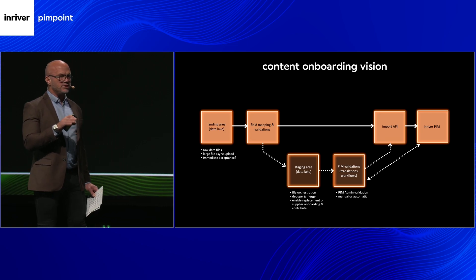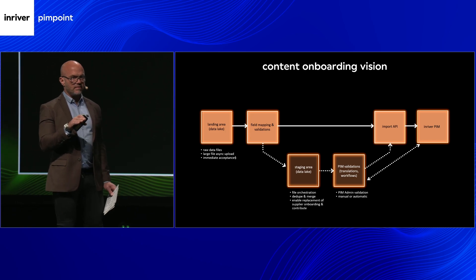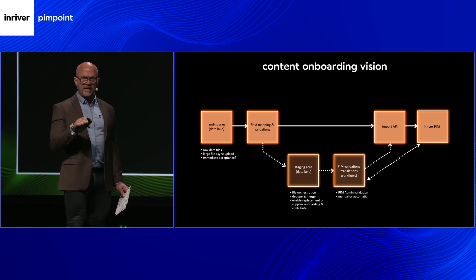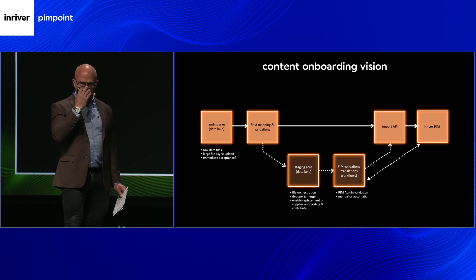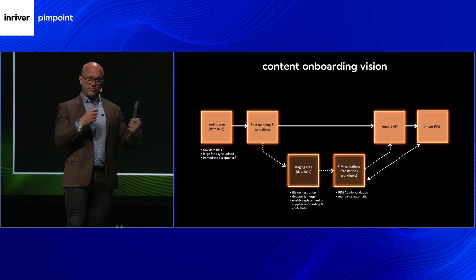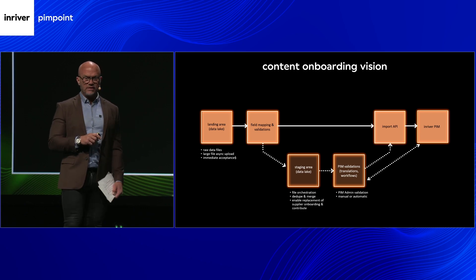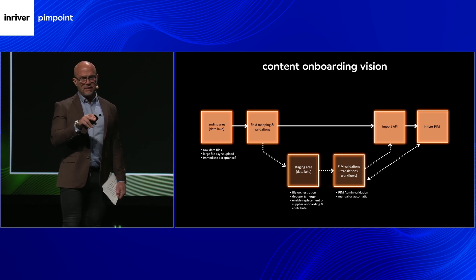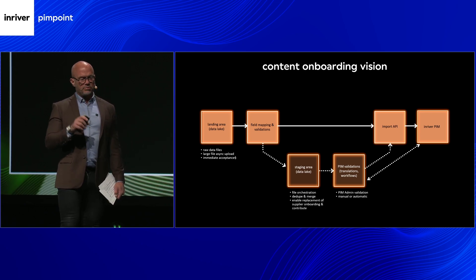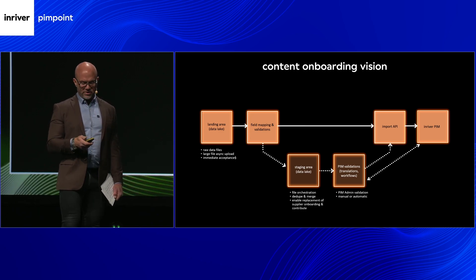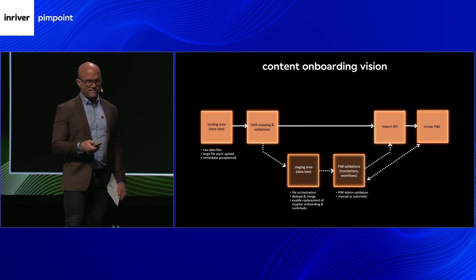We see a lot of partners in the future doing work in this space — applying AI and additional functionality on the data before it actually comes into the PIM. The PIM validation step here is where we can improve data before it enters the PIM, as distinct from the file-level validation you saw today which is more focused on the person providing the file. This ensures only proper data comes into the PIM.